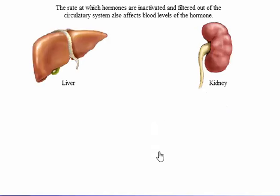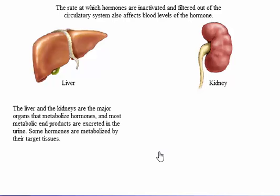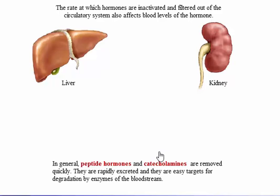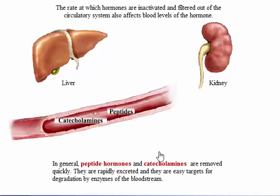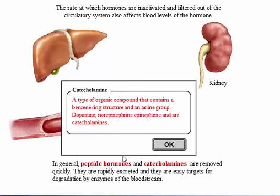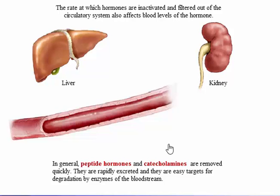The rate at which hormones are inactivated and filtered out of the circulatory system also affects blood levels of the hormone. The liver and the kidneys are the major organs that metabolize hormones, and most metabolic end products are excreted in the urine. Some hormones are metabolized by their target tissues. Hormones escape from the circulatory system when they are filtered into the kidney tubules and then excreted. In general, peptide hormones and catecholamines are removed quickly — they are rapidly excreted and are easy targets for degradation by enzymes of the bloodstream. The measure of time for a hormone in the bloodstream is called its half-life, which is the time it takes for the concentration of the hormone to be reduced by half.